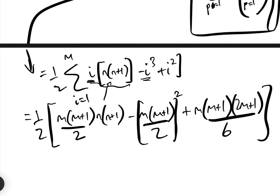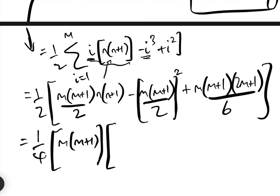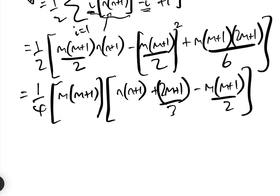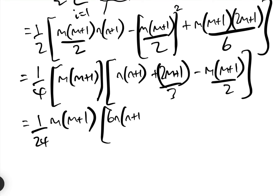That gives us one quarter times m(m+1), and factoring further we get n(n+1) plus (2m+1) over 3, minus m(m+1) over 2. Simplifying that a little bit gives us 1 over 24 times m(m+1), multiplied by 6n(n+1) plus 4m plus 2, minus 3m squared minus 3m.